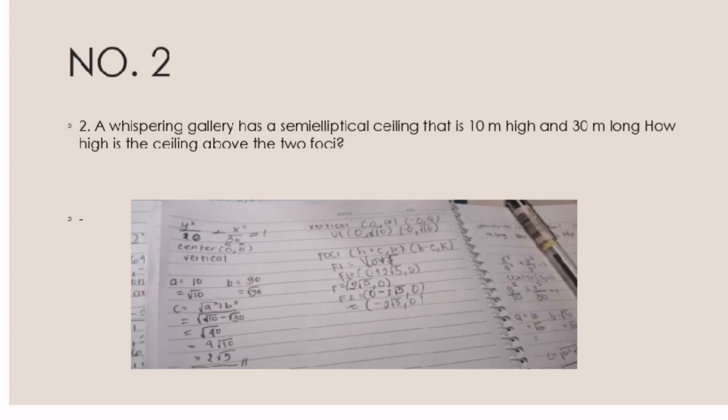Number 2. A whispering gallery has a semi-elliptical ceiling that is 10 meters high and 30 meters long. How high is the ceiling above the focus? The standard form is y squared over b squared minus x squared over a squared equals 1, with center at the origin.